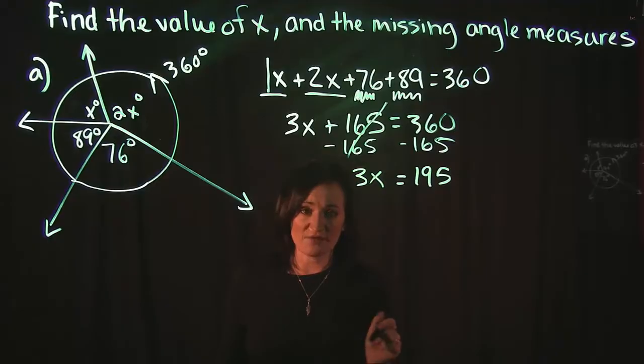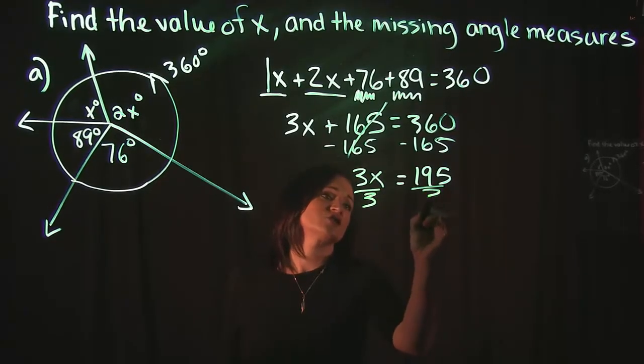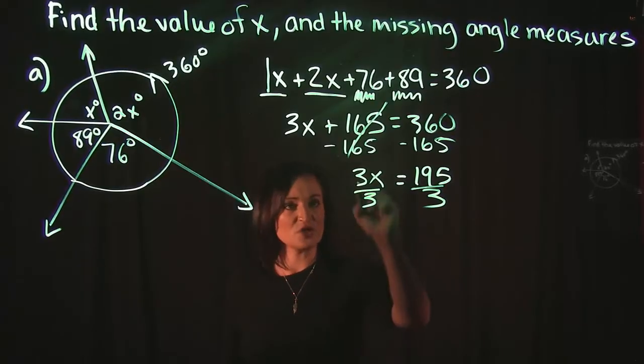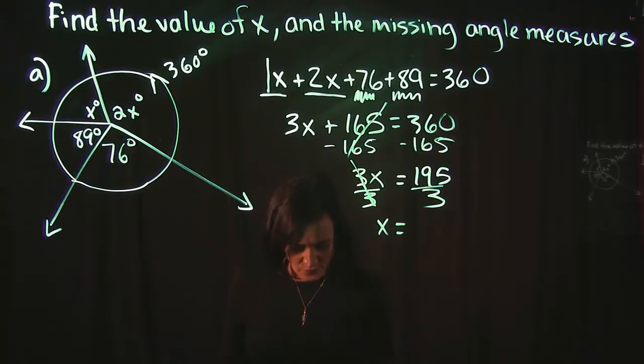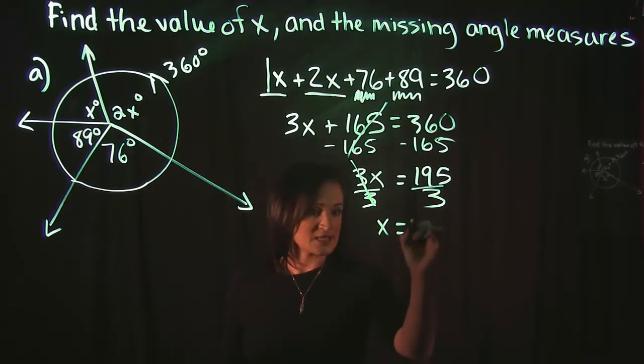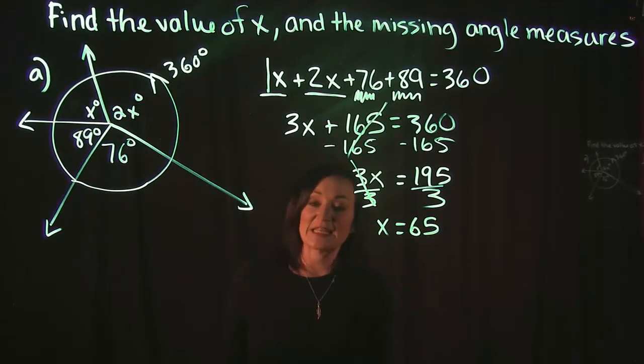And then we drop down to 3x on the left-hand side. Last thing left to do here to solve this equation is to divide out the coefficient, which is a 3. It cancels out on the left side, and we are left with x is equal to 65.